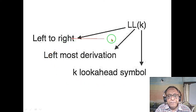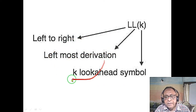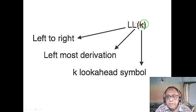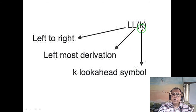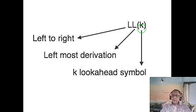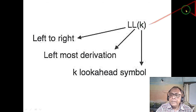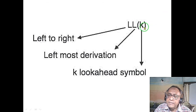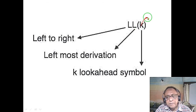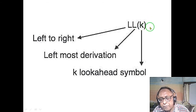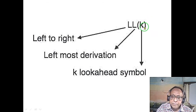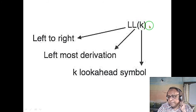LL stands for left-to-right leftmost derivation with k lookahead. If k is zero it is essentially blind — no power. With k=1 it is standard LL(1). LL(2) is slightly more powerful, but computers cannot practically handle two symbols simultaneously, so LL(1) is the standard. If k is not mentioned, it is assumed to be 1.